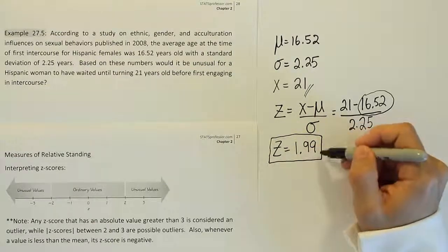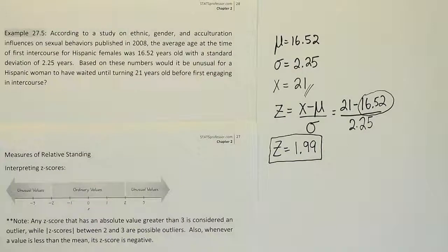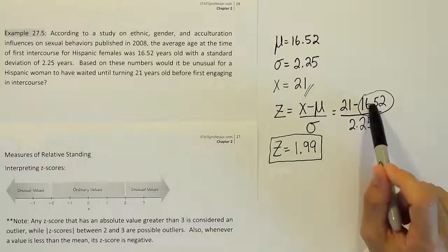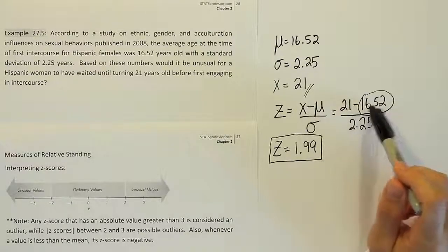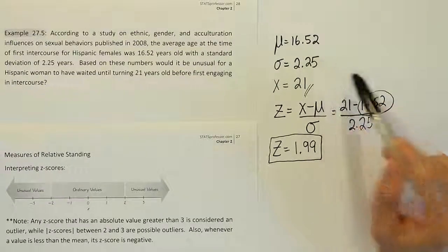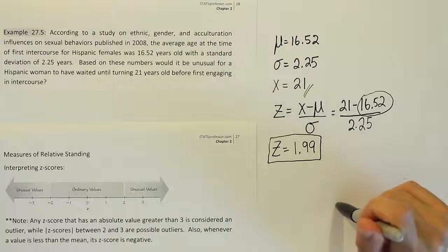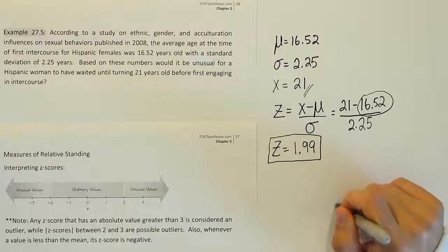And what's great about the z-score is that it can answer questions like this for things that we don't even know much about. We don't necessarily know what's typical in the population of women. But when we see this mean and the standard deviation given to us, we're able to use the z-score to come up with an answer to that question: is it unusual? And that's actually really nice.